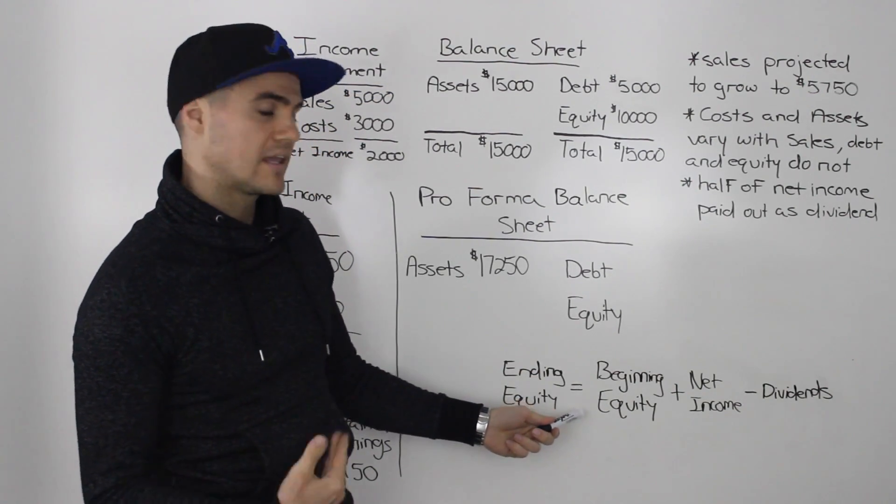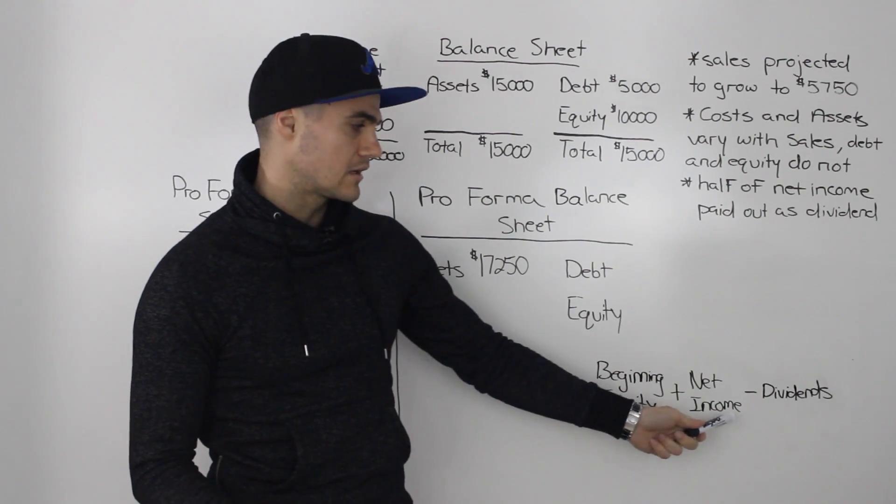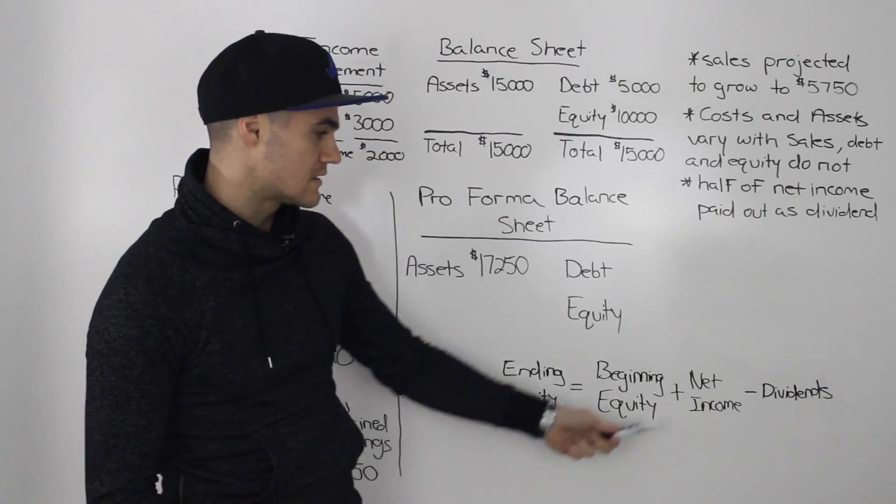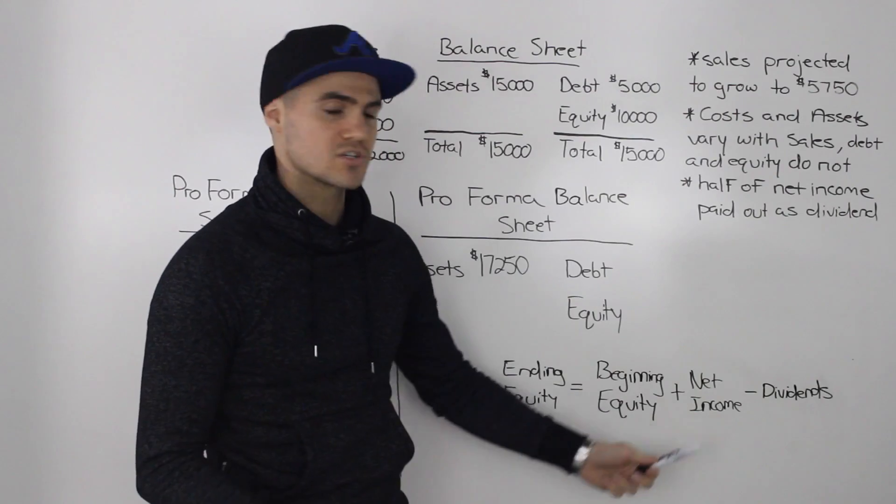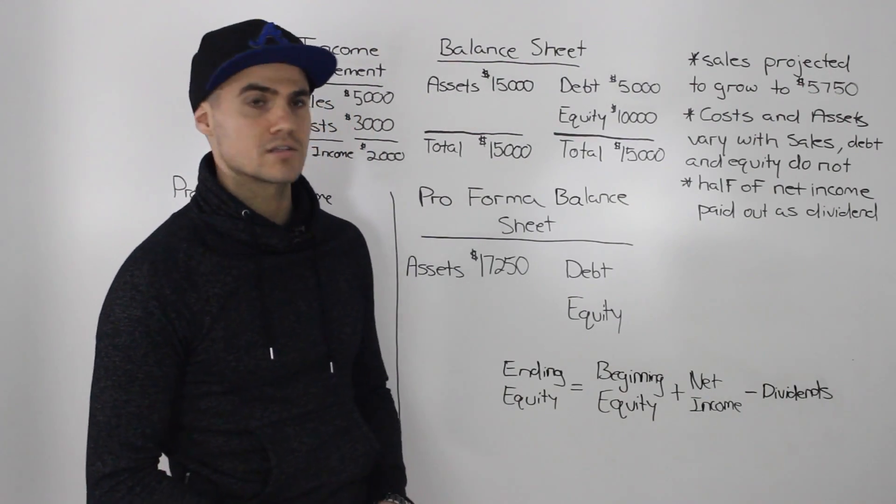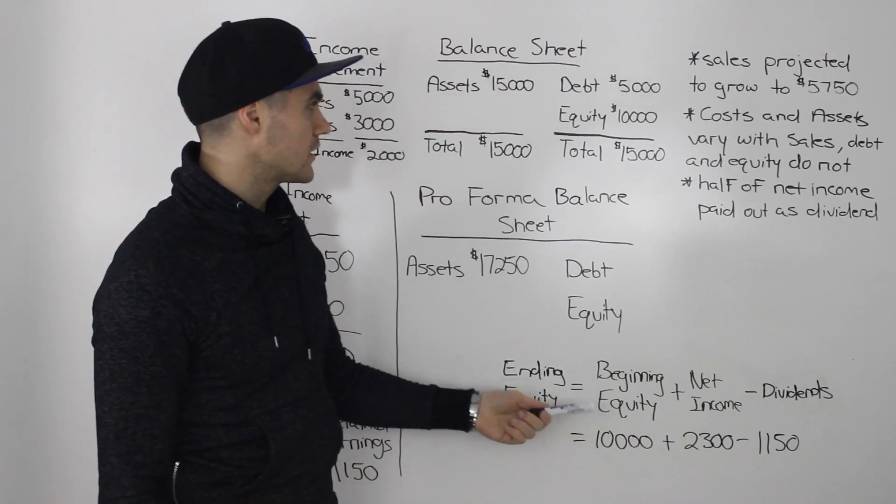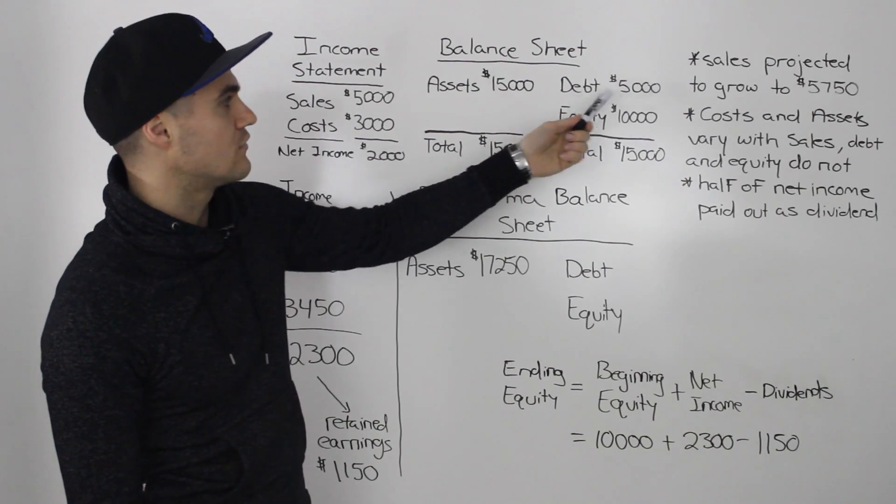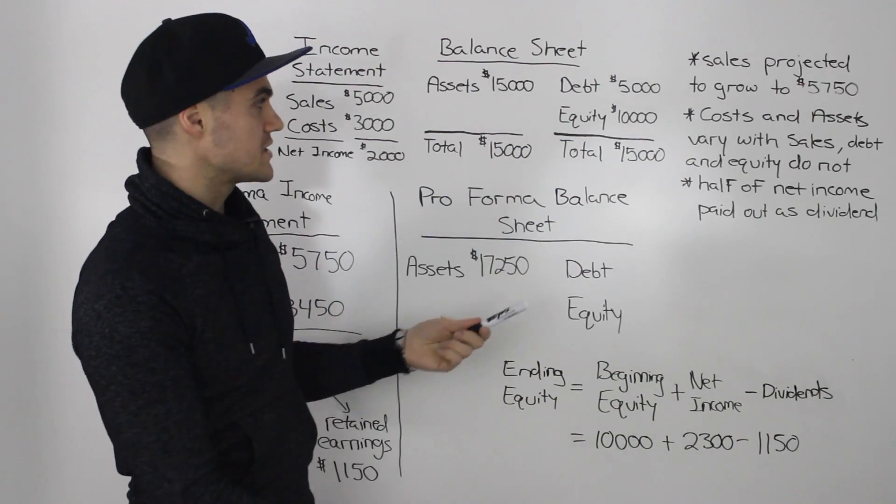So the ending equity is equal to the beginning equity plus the net income minus the dividends. And this net income minus dividends part is just basically the retained earnings. So the beginning equity we can get from the balance sheet of last year, which is the end of last year.